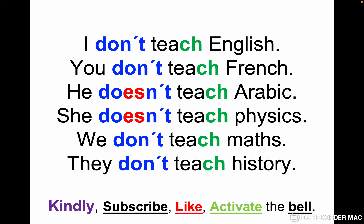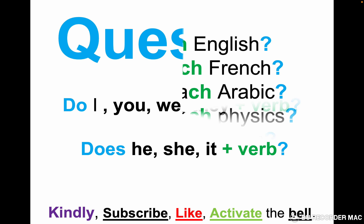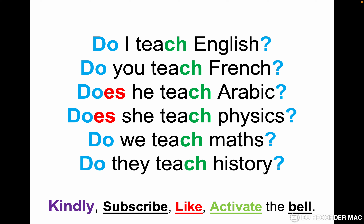Negative form: I don't teach English, you don't teach French, she doesn't teach Arabic, she doesn't teach Physics, we don't teach Maths, they don't teach History. In the negative form the verb doesn't change with all pronouns, but you need to put 'he doesn't' and 'she doesn't.' Question form: Do I teach English? Do you teach French? Does he teach Arabic? Does she teach Physics? Do we teach Maths? Do they teach History? In the question form the verb doesn't change, but you need to write 'does he' and 'does she.'